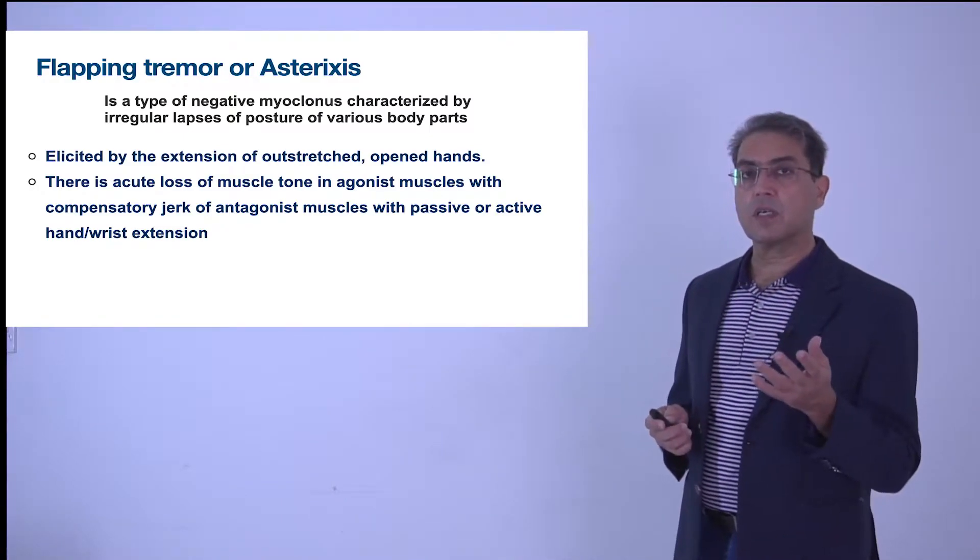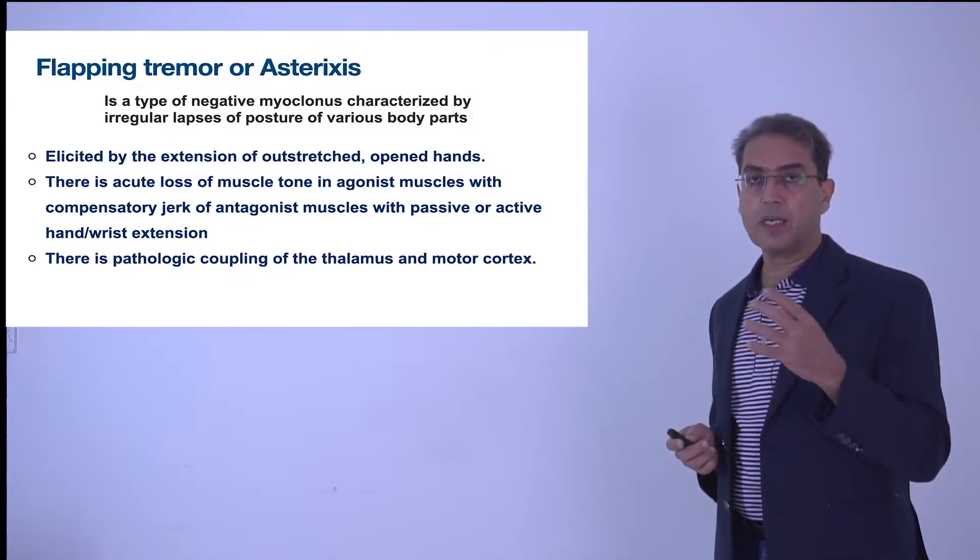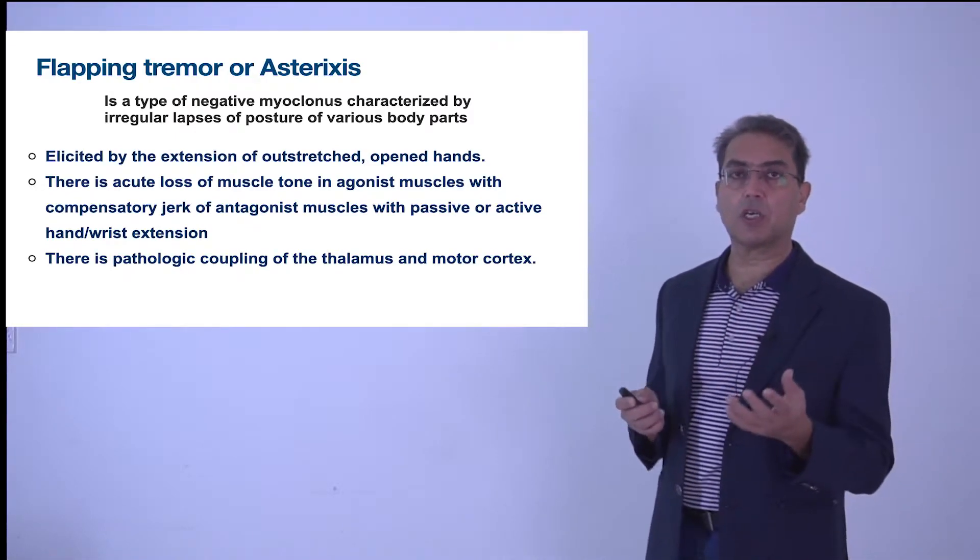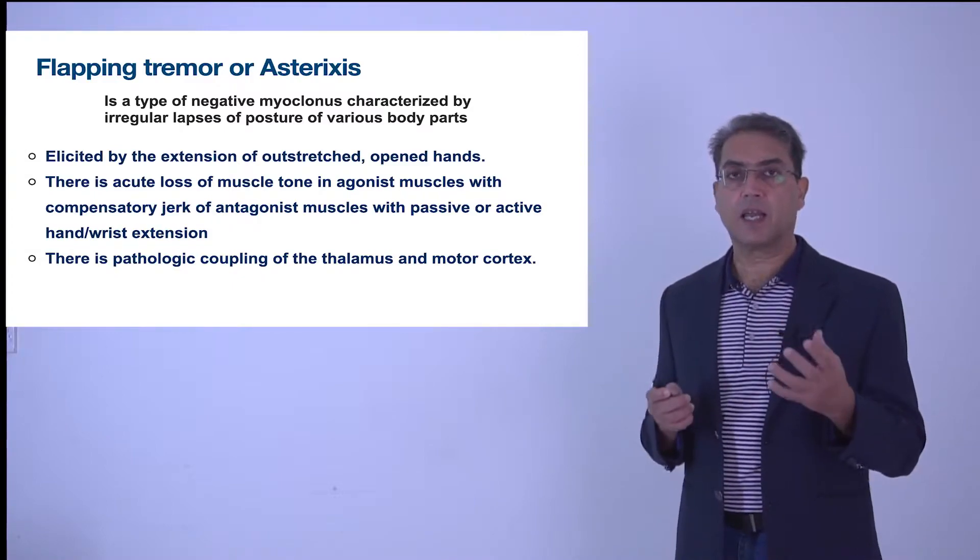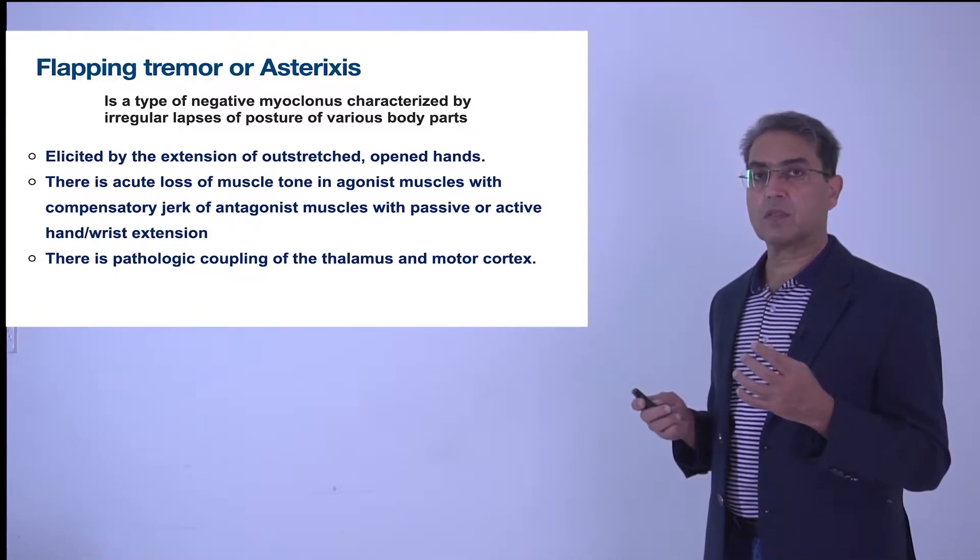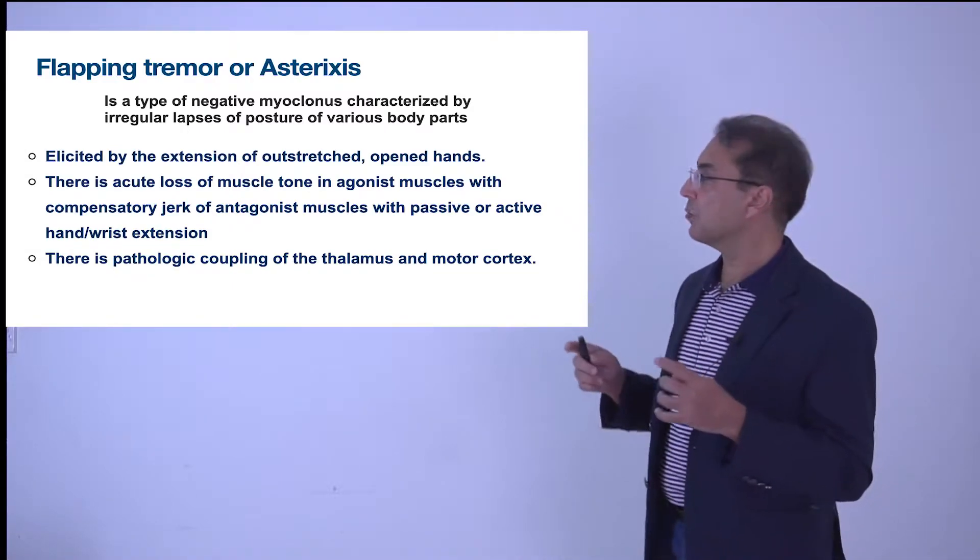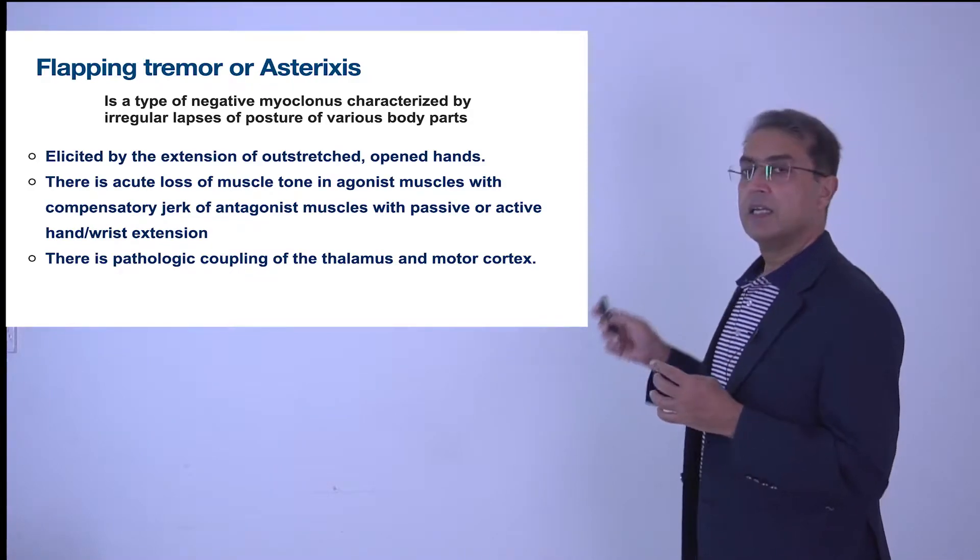Now why this tremor occurs, we clearly do not know, but there is a pathological coupling of impulses between the thalamus and the motor cortex. So there is a problem of communication between the motor cortex and the thalamus.